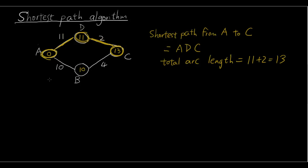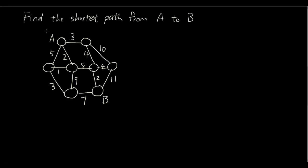Now, if I give you a more complicated network — I have just made up a network — find the shortest path from A to B. A is here, B is there. And here is the shortest path algorithm.